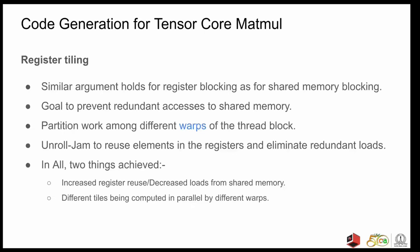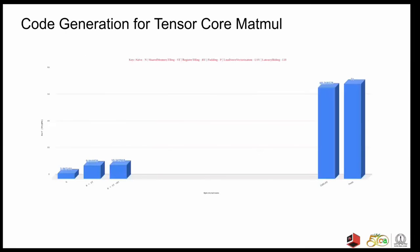So, as we tile for shared memory, what we can try to do is try to prevent redundant accesses to the shared memory as well. So, we can tile the code once again and perform unroll and jam on the innermost loops to achieve reuse in the registers. Each tile is also then assigned to different warps to process in parallel. As a result of this optimization, we get 10.3 teraflops. It's slightly higher than what we had before, but not that much.